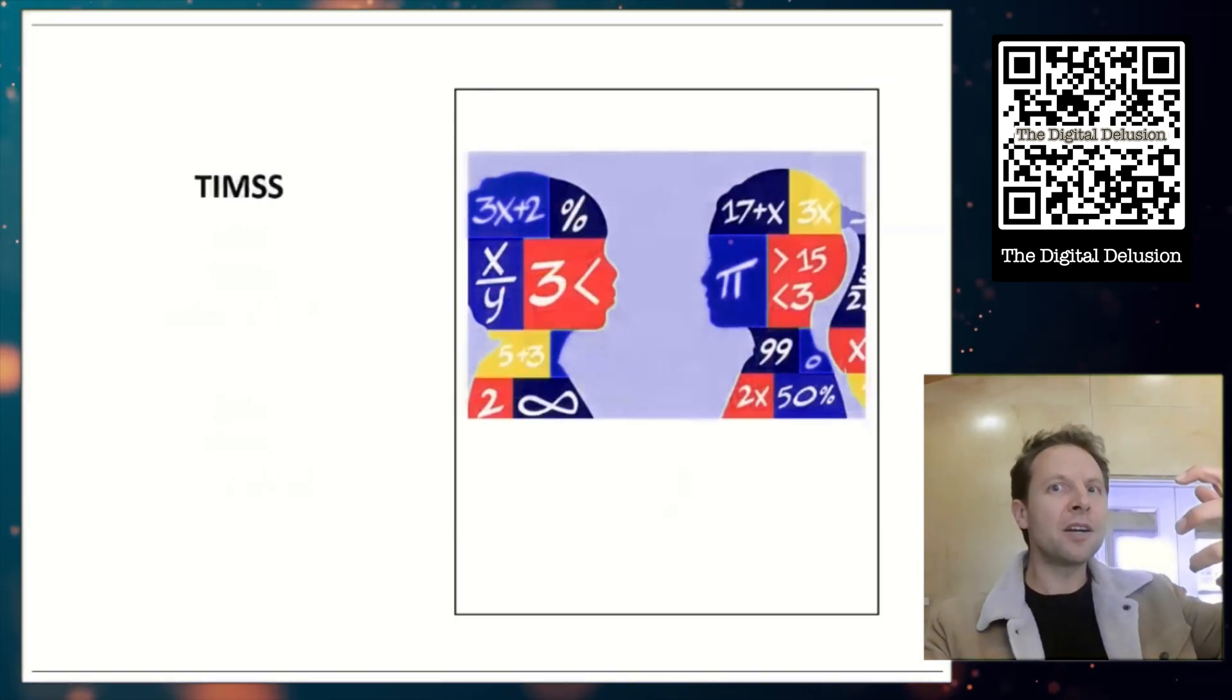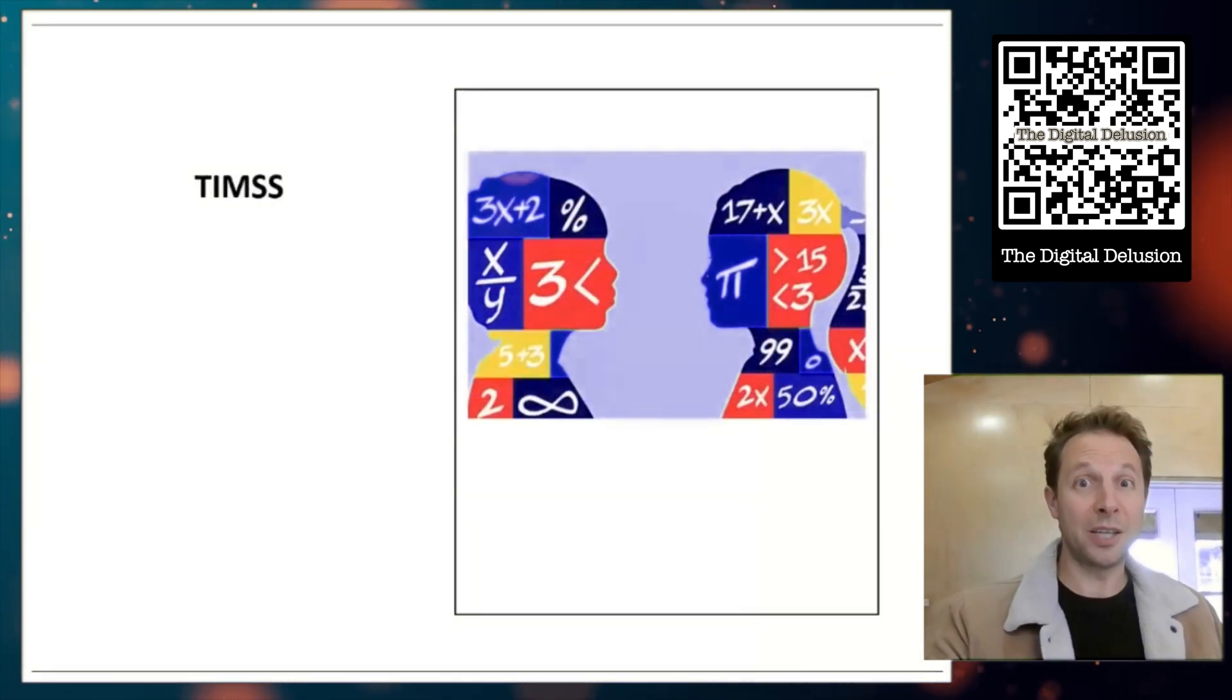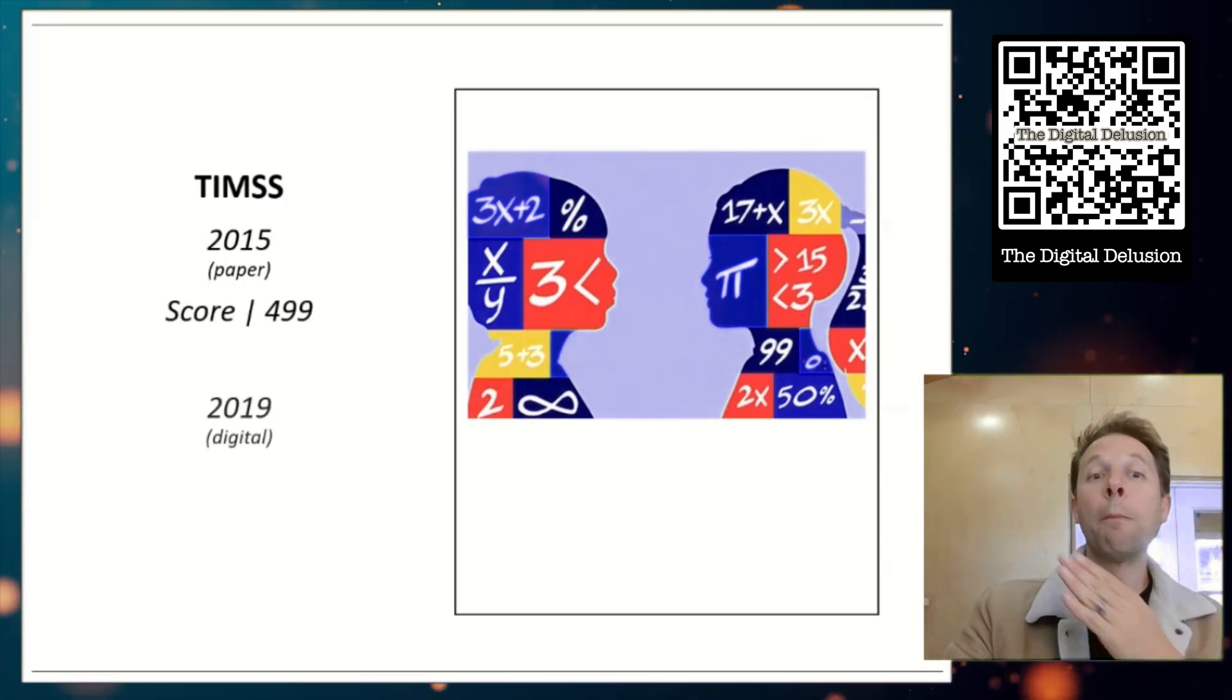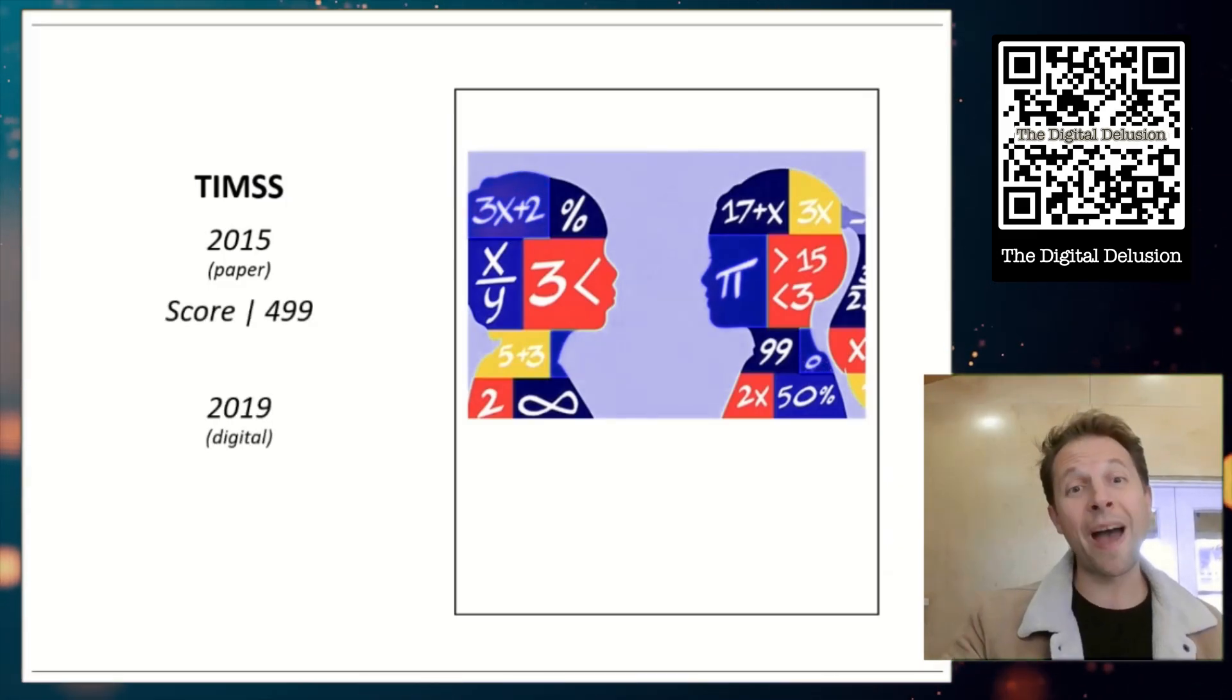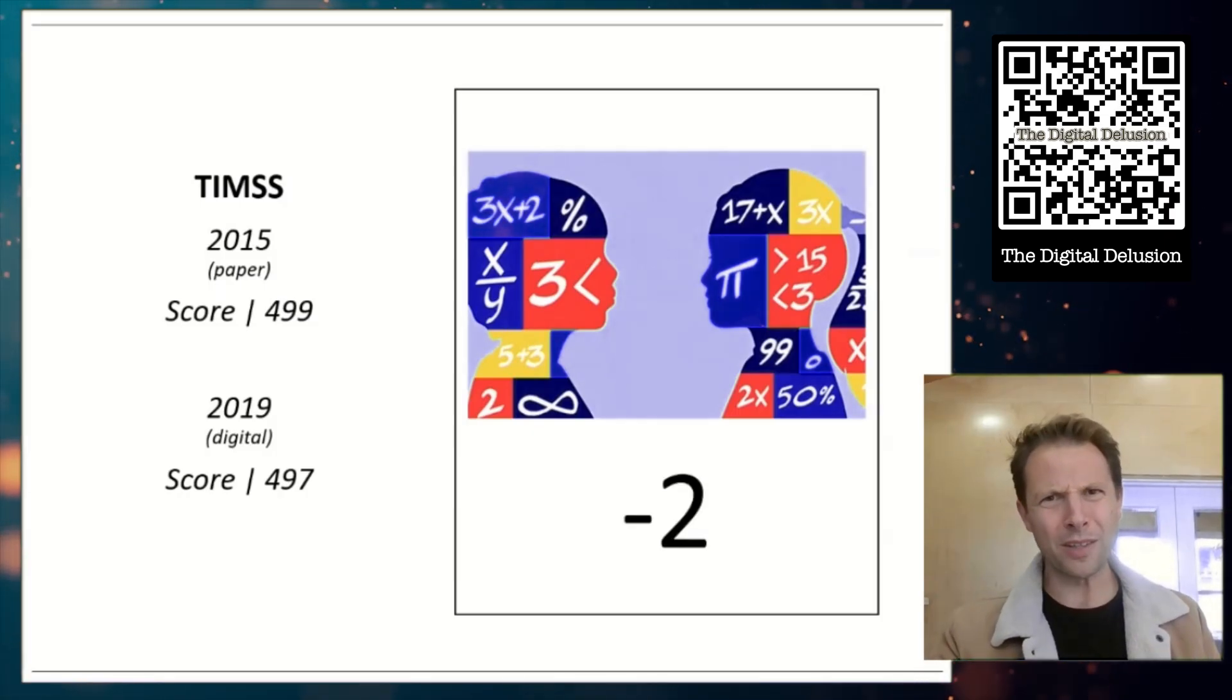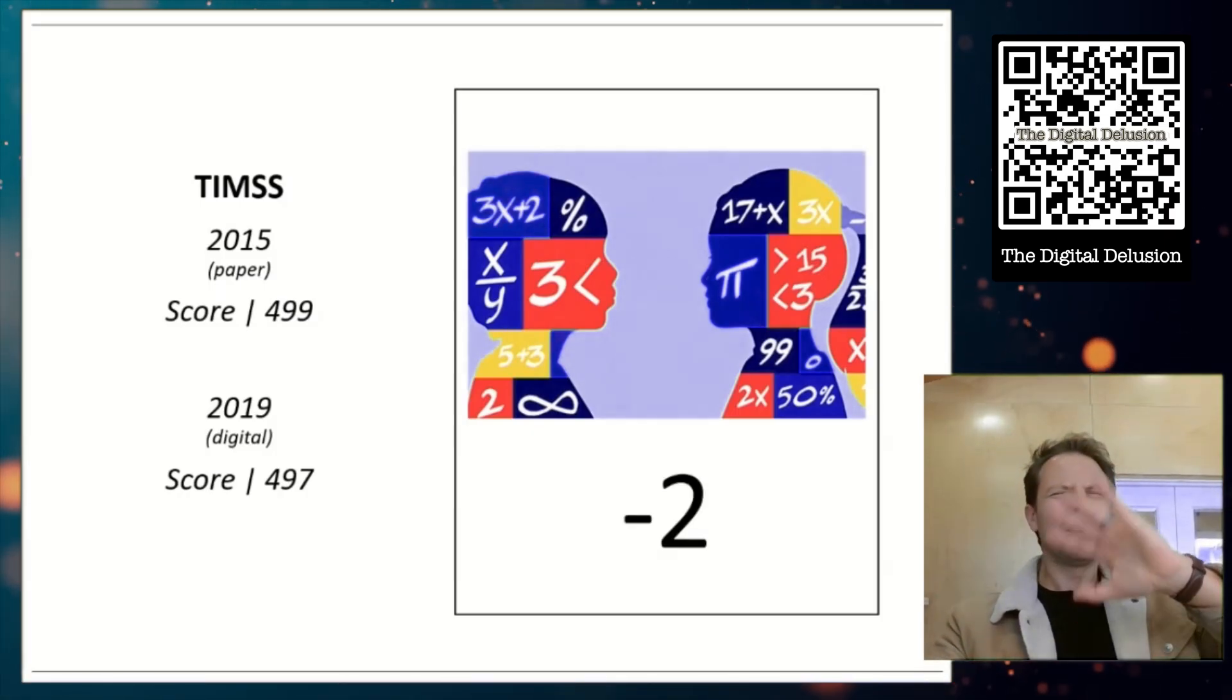What about TIMSS? This is the international test of mathematics skills and ability. In 2015, that was the last time they did paper, average score 499. But in 2019, when they moved digital, average score only of 497. So that's only a drop of two points. Let's try one more.